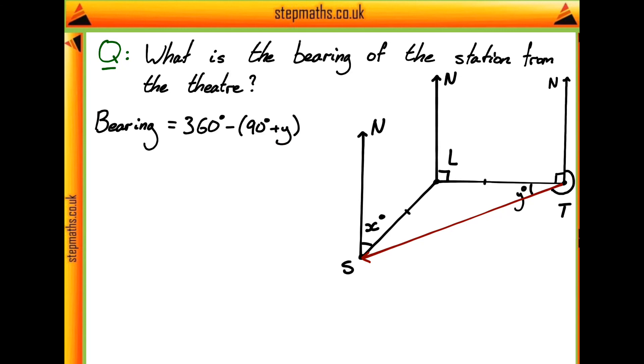So let's see if we can find any ways of actually finding our angle y. Well, we know that this distance from l to t and l to s is exactly the same, which is why I've labelled it with two dashes here. So what that means is that this angle is going to be y as well, because the triangle is symmetrical around this midpoint.